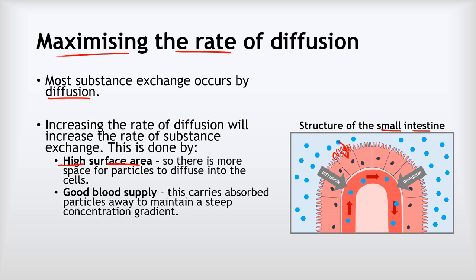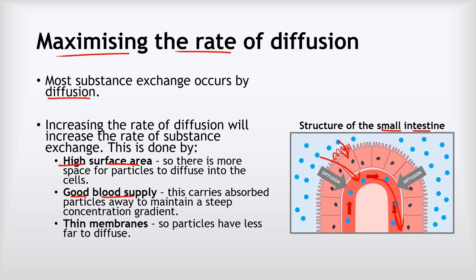The next thing is ensuring there is a good blood supply. Once particles enter the blood, they're quickly carried away rather than building up, which keeps a high concentration gradient and ensures the rate of diffusion remains fast. Lastly, we have thin membranes, meaning there is a shorter distance for the particles to diffuse, which again speeds up the rate of diffusion.